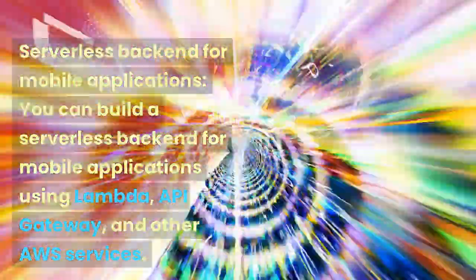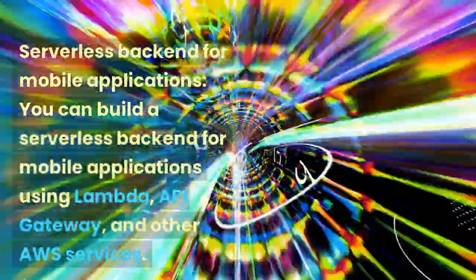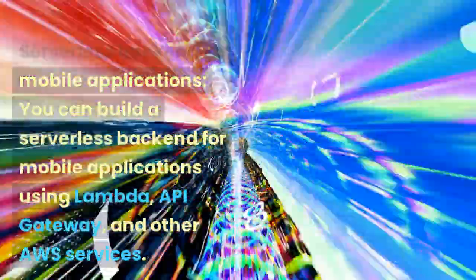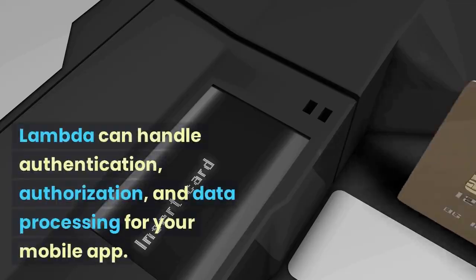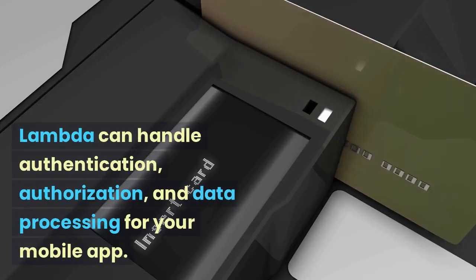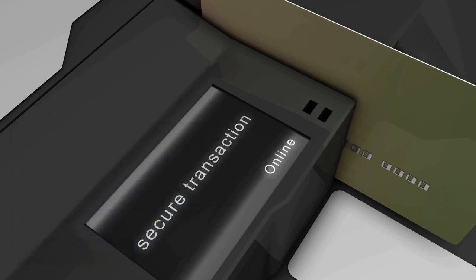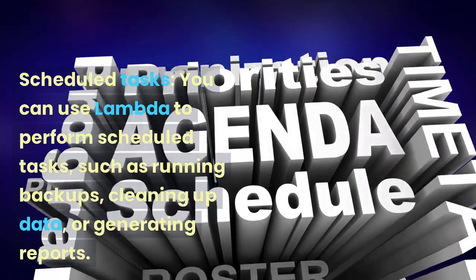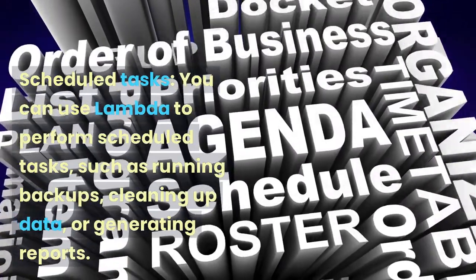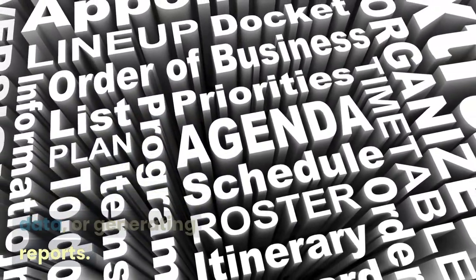Serverless Backend for Mobile Applications: You can build a serverless backend for mobile applications using Lambda, API Gateway, and other AWS services. Lambda can handle authentication, authorization, and data processing for your mobile app. Scheduled Tasks: You can use Lambda to perform scheduled tasks, such as running backups, cleaning up data, or generating reports.